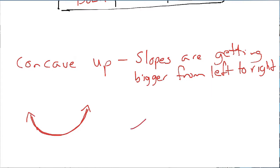Now it may only be a part of the shape — it could be like this, or like this. Both of those are concave up graphs. So it may not be the whole U, but when you think about drawing slopes, if you drew slopes to that, each as you go from the left to the right, the value of the slope is getting bigger.